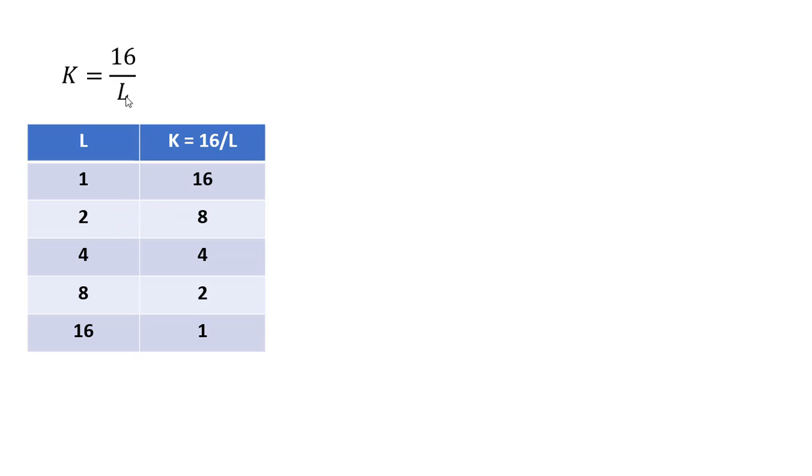Another one here, if L is 2, 16 divided by 2 is 8. Another combination of labor and capital that produces 16 units of output. And here are several other combinations.